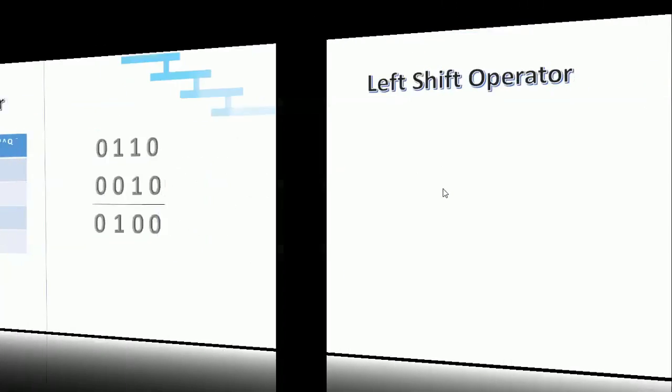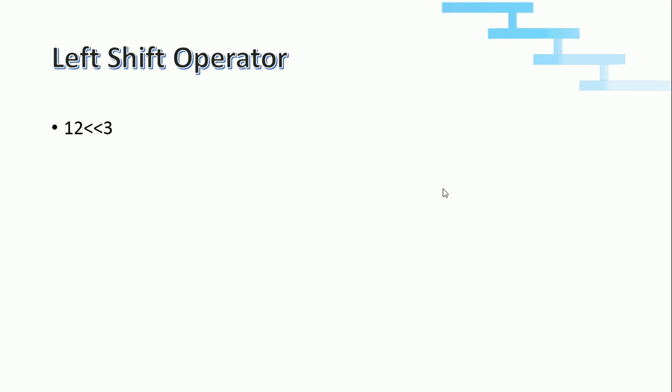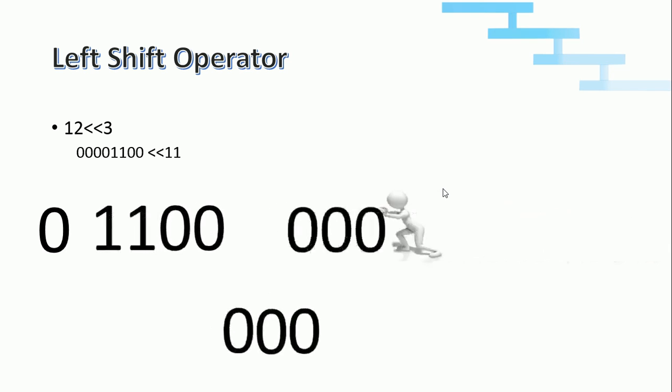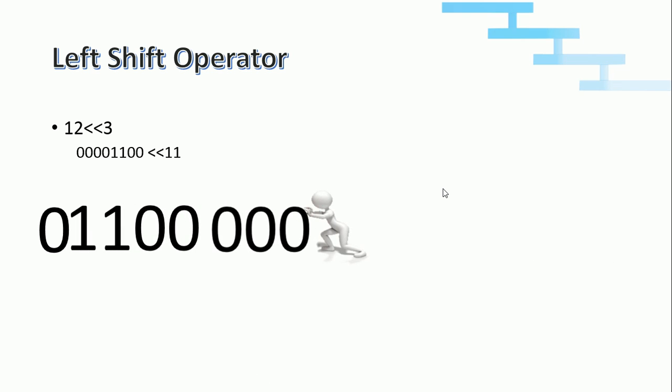Now we will see about shift operators. Shift operators move all the bits in a binary value by a determined number of places to either left or right. The left shift operator moves bits to the left side and is denoted by two less-than symbols (<<). Example: left shift 12 by 3 bit positions. Convert 12 to binary, then append 3 zeros to the right, shifting existing bits left. The leftmost sign bit is preserved. We got the output 01100000, that is 12 left-shifted by 3 gives us 96.